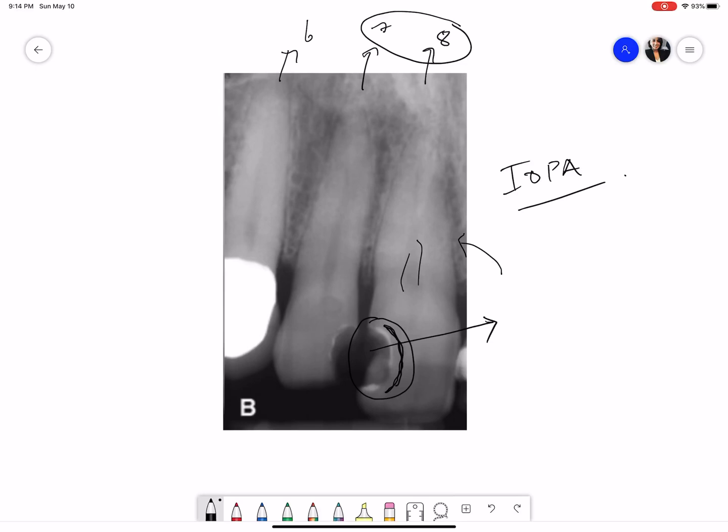Next we move on to number 7 which also has a well defined radiolucency in the crown part of the area. Again we see a radiopaque line which could be suggestive of a liner or a base and this radiolucent area could be suggestive of a dislodged restoration or radiolucent restorative material, maybe composite.